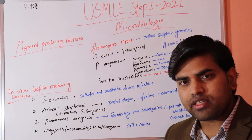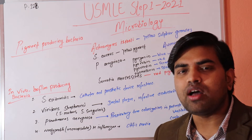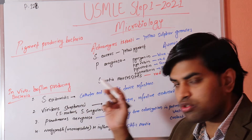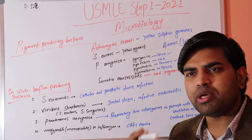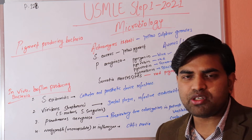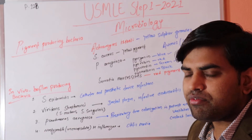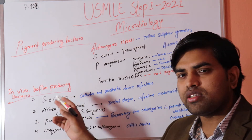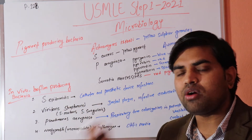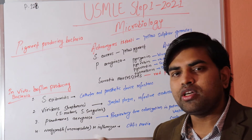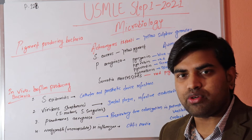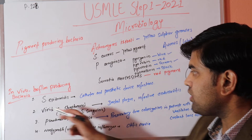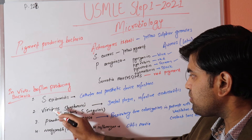Staph epidermidis is normally harmless skin flora that doesn't cause disease unless it enters the blood or colonizes a prosthetic device. Hip and knee replacements are costly, complex surgeries. If biofilm forms on these implants, the entire implant must be surgically removed to cure the infection — otherwise the infection can be fatal.